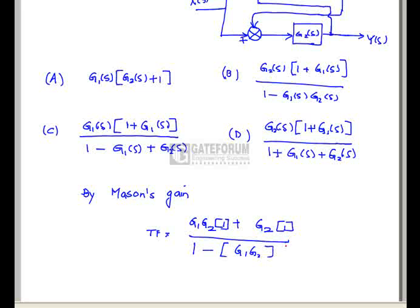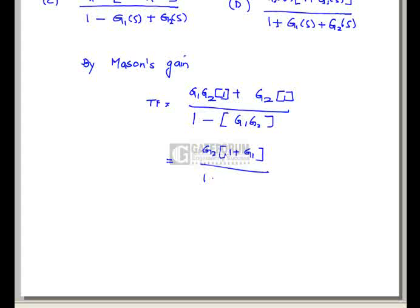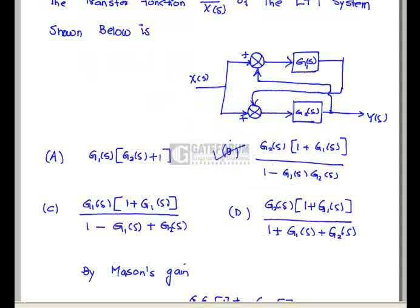For two non-touching loops, there are no two non-touching loops. Hence the transfer function equals G2 (1 plus G1) divided by (1 minus G1 G2). Hence option B is correct.